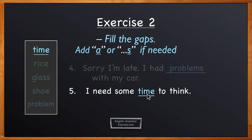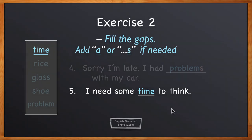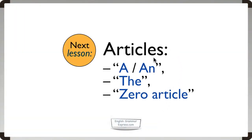So that's the end of the exercises for countables and uncountables. In the next lesson, we're going to look at the three types of articles in English: a or an, the, and zero article.